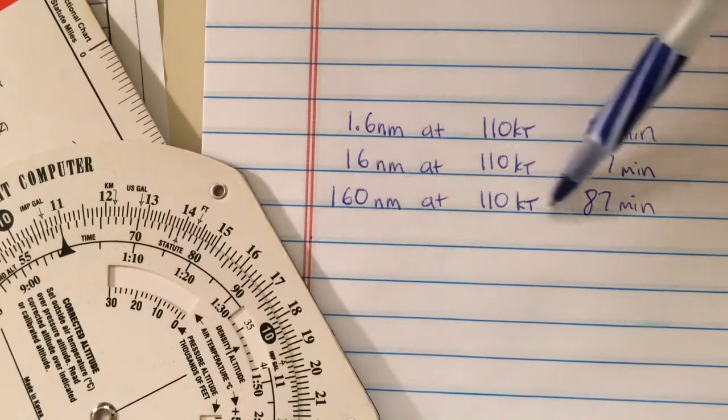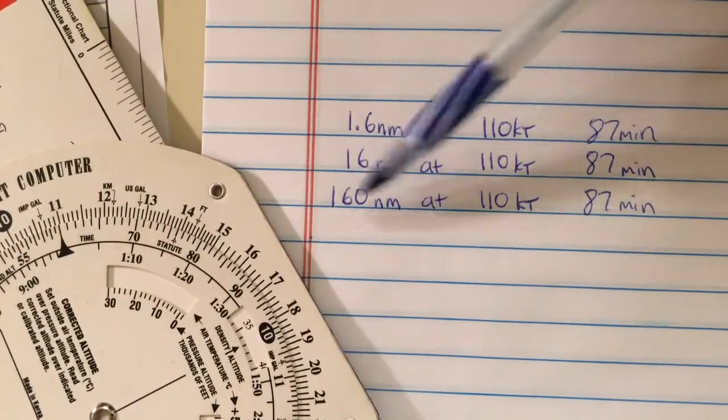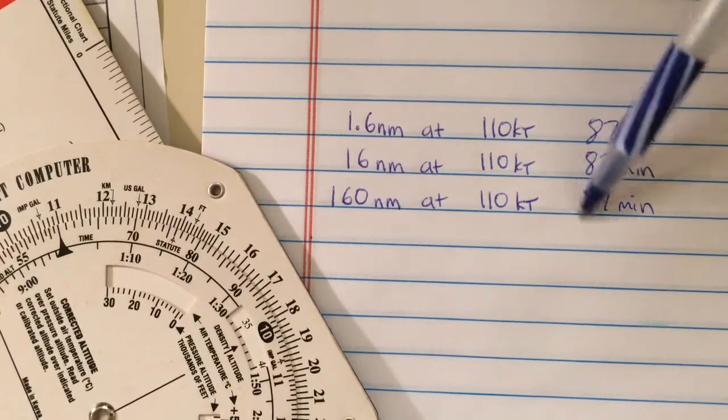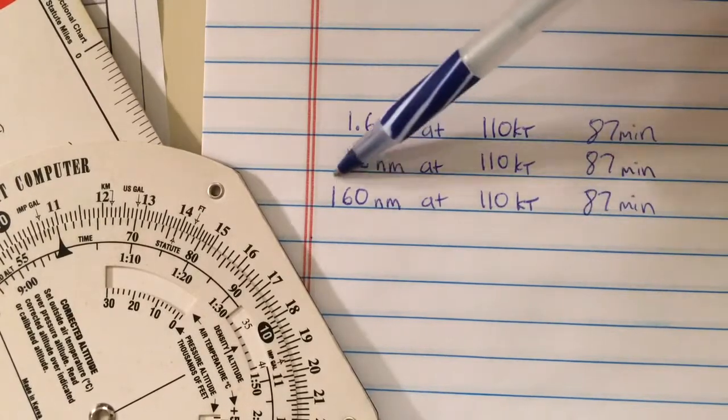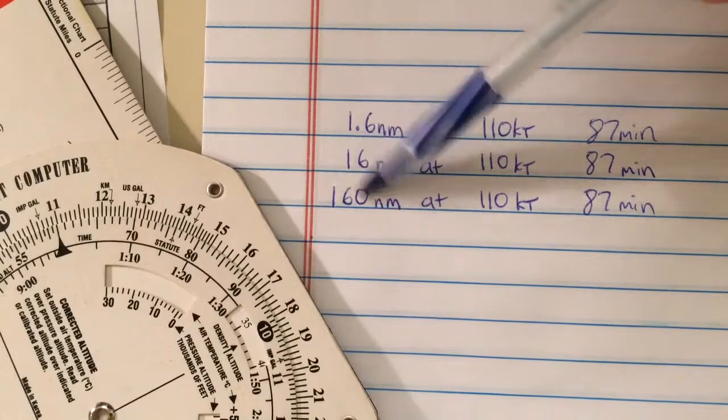Our planes travel at roughly 2 nautical miles per minute, so to see whether you're in the ballpark, you can simply take the amount of minutes, multiply it by 2, and you should be somewhere reasonably within the range of your nautical miles.